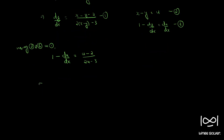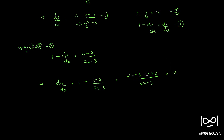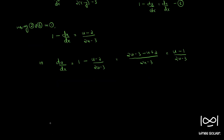Therefore, du by dx is equal to 1 minus u minus 2 by 2u minus 3. On simplification, we can write this as 2u minus 3 minus u plus 2 by 2u minus 3, which is equal to u minus 1 by 2u minus 3. Now we can apply the method of separation of variables, bringing all terms of u to one side and x to the other, giving 2u minus 3 by u minus 1 du equal to dx.